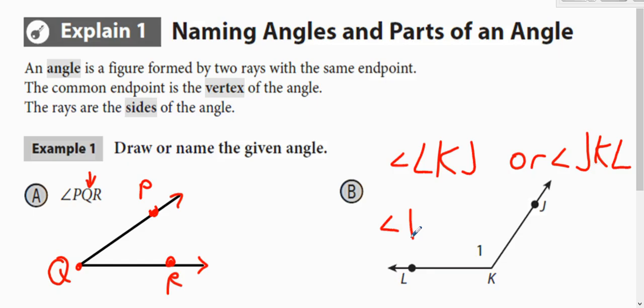Also, since they have the little number in there, that's another kind of shortcut way of naming angles. If you put a number, you can just name it with that number. So that's also just angle 1.